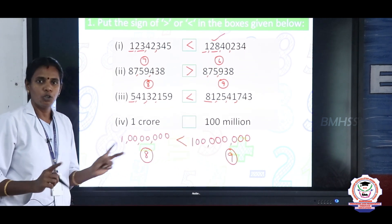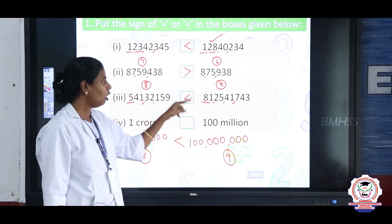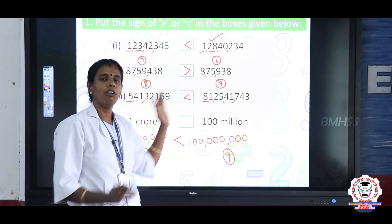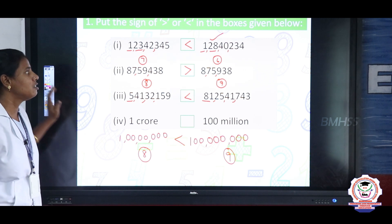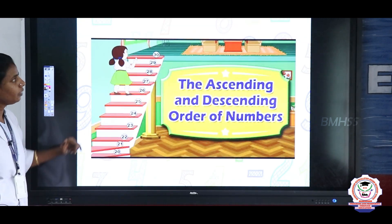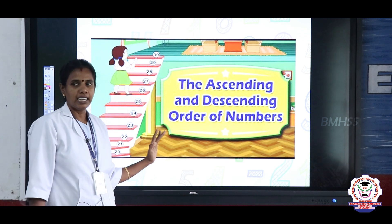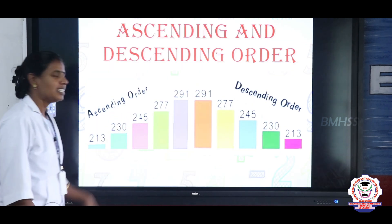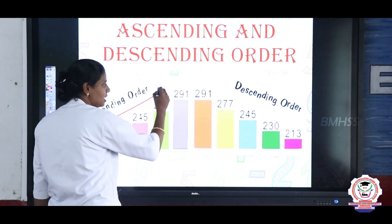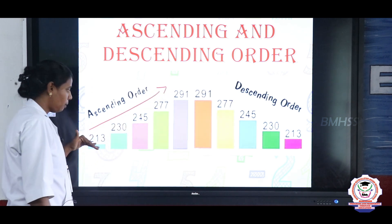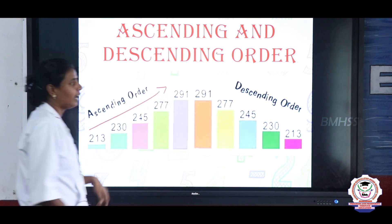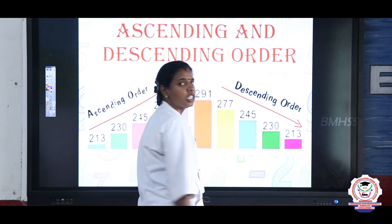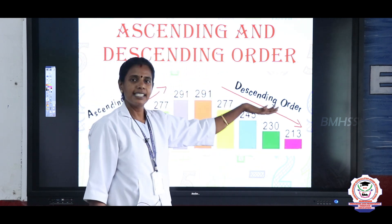Is it clear how to compare two numbers? When both numbers have the same number of digits, we compare starting from the first digit. When the numbers have different digit counts, it is easy — the number with more digits is greater. Next, we are going to see ascending and descending order. Ascending order means arranging numbers from the smallest to the greatest. Descending order means arranging numbers from the greatest to the smallest.